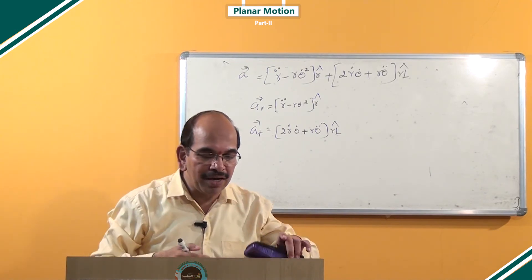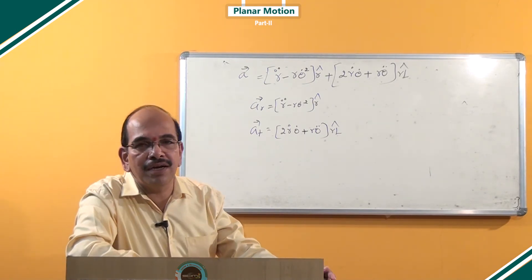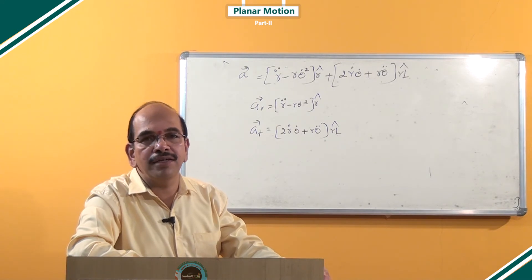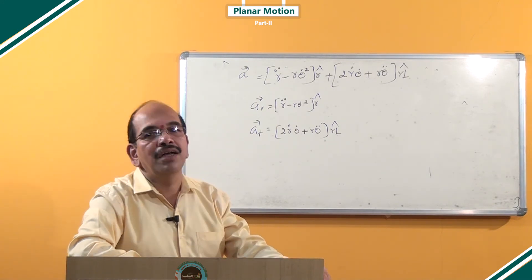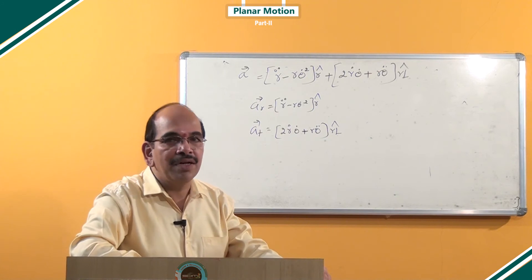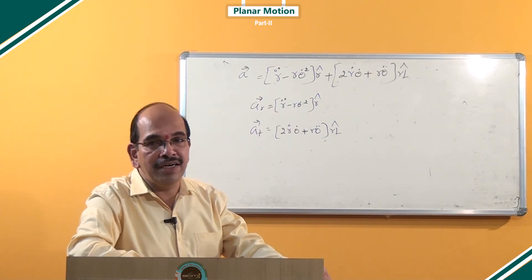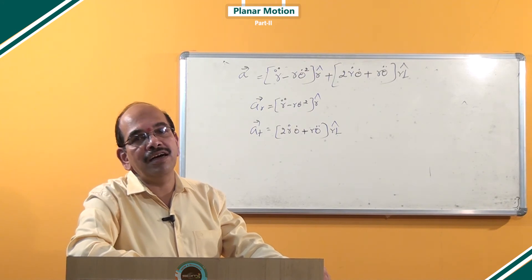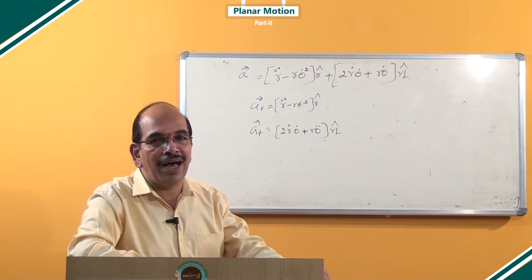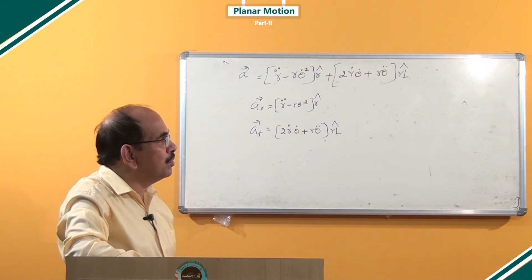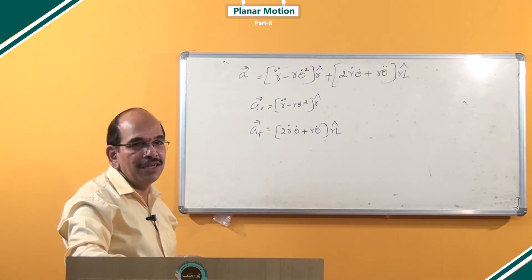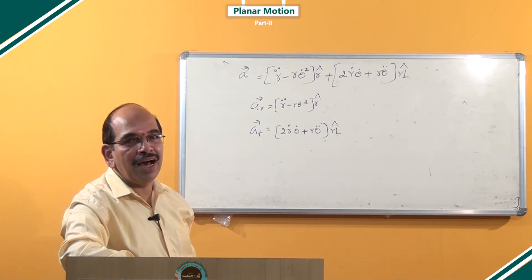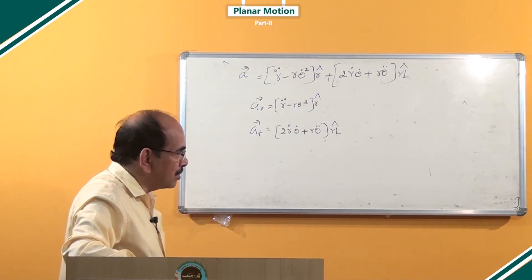Now, whenever you apply this formula for a particle executing uniform circular motion, the radius vector remains the same. Therefore, dr/dt or r-dot is zero, and dθ/dt is the constant angular velocity. If you substitute these values into these expressions, you ultimately get the expression for centripetal acceleration or centripetal force.